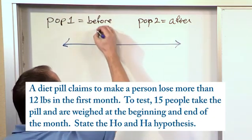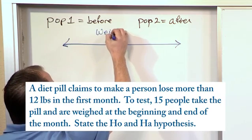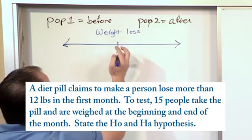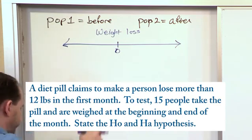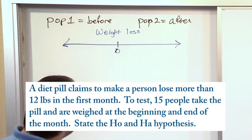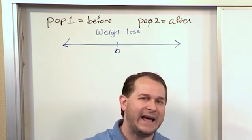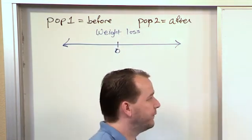Draw a little number line, and this is going to represent the weight loss. So this is zero, okay, right here. So basically, if this is zero and this is a weight loss scale, what is weight loss? It's after weight minus before.